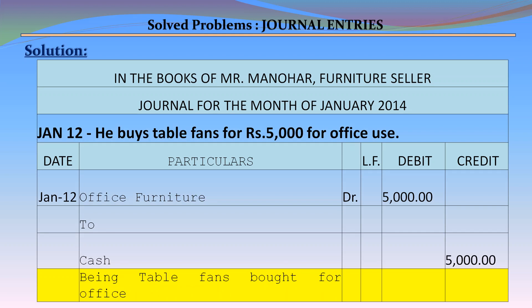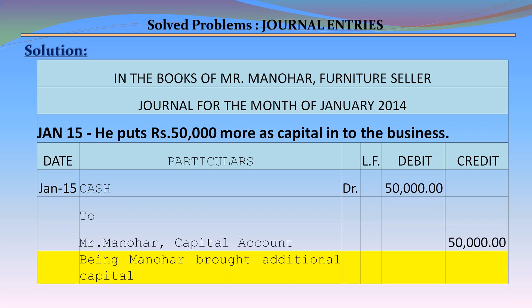January 12 – He buys table fans for Rs. 5,000 for office use. Journal entry: Office Furniture Account debit Rs. 5,000 to Cash Account credit Rs. 5,000, being the table fans bought for the office.